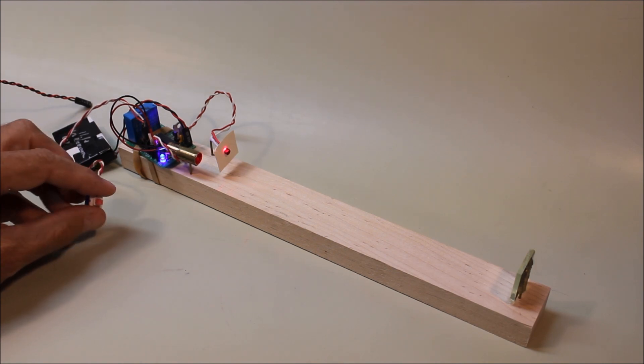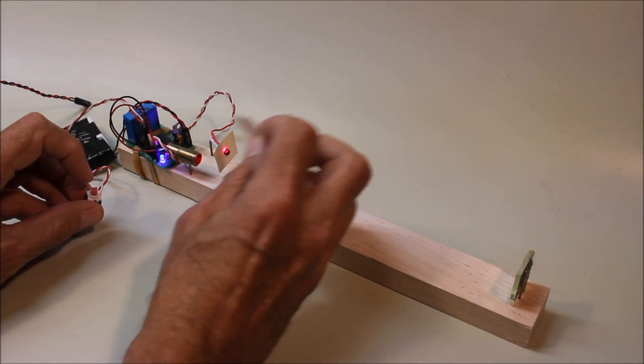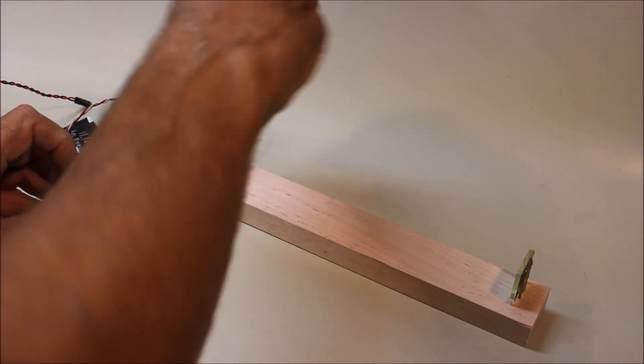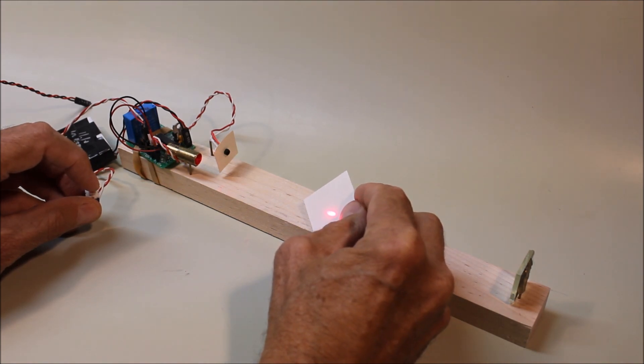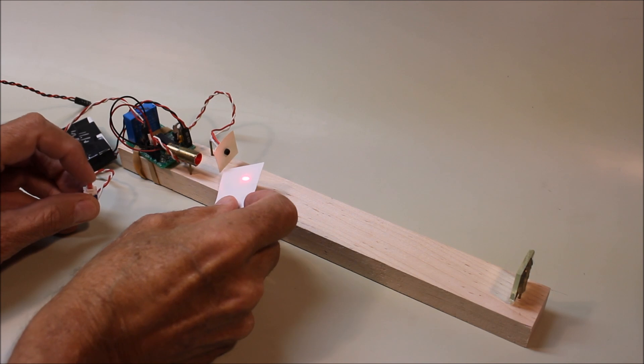There's also a switch on this that allows you to do a rather neat trick. You'll notice that the laser is quite visible on this piece of paper. I'll hold it there for a minute. If I push this button, I think you'll notice that the laser beam just about disappears. Let me do that a little bit closer to the laser.